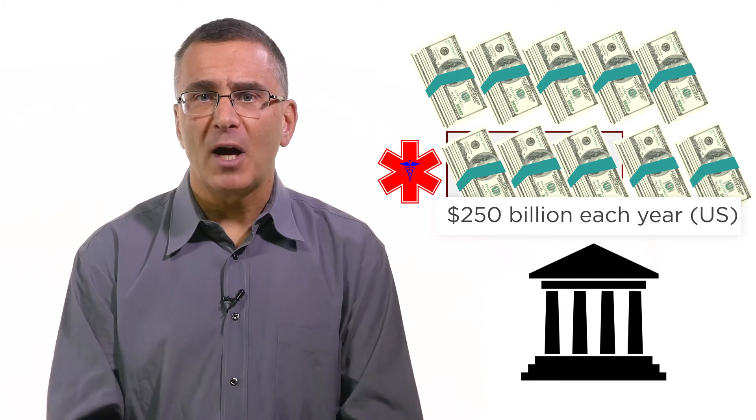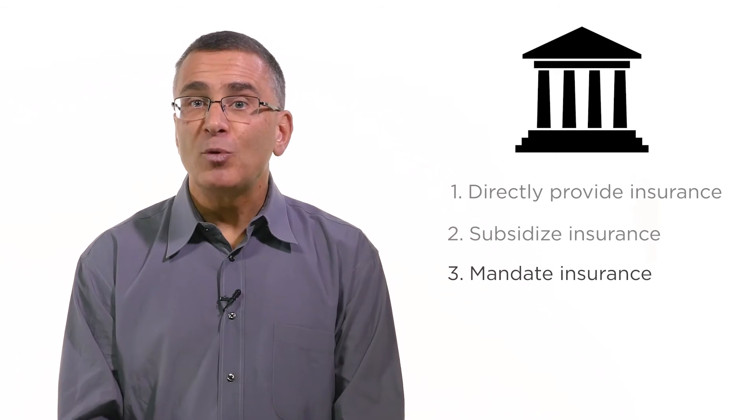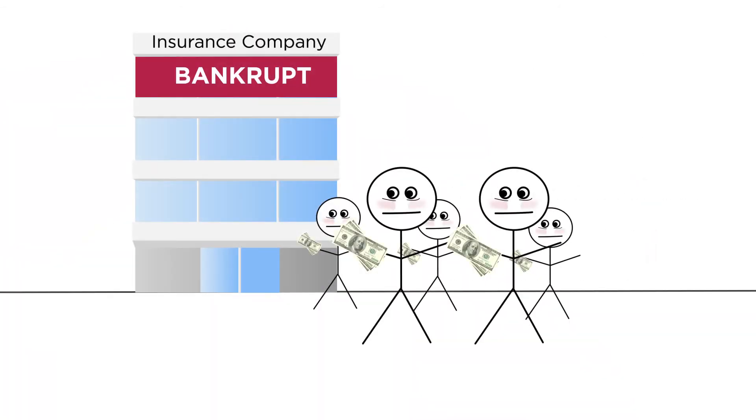Now what's the last option? The government can mandate the purchase of health insurance. As we said earlier, the problem we have is that healthy people won't buy health insurance. If only sick people get insurance, the insurance company will lose money. But what if the government says that every healthy person has to buy health insurance or else pay a fine?